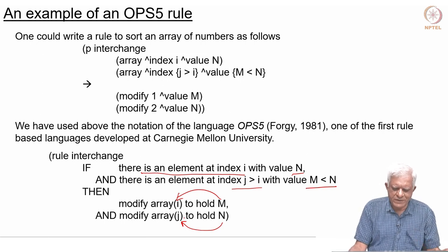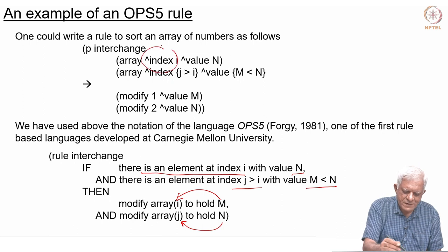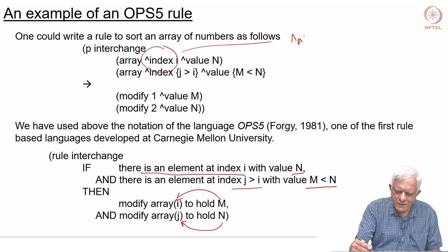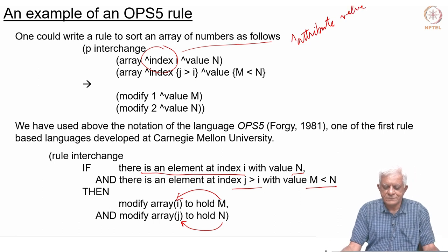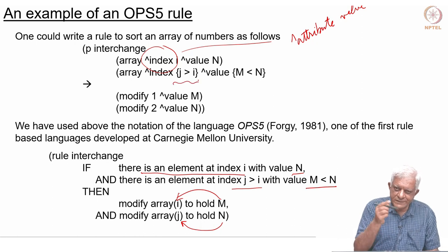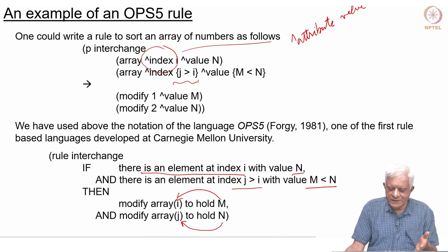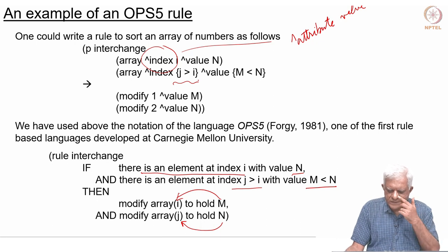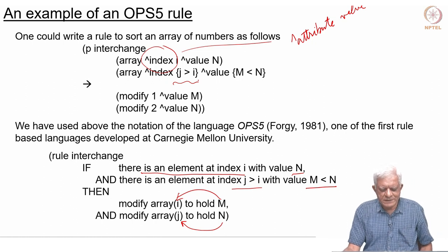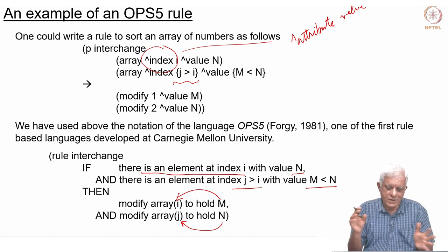In OPS5, the notation uses attribute-value pairs, allowing relational symbols as values. The rule says: if at index i the value is n, and at index j (greater than i) the value is m (less than n), then modify the two locations — the first should contain m and the second should contain n. This is an example of how much you can do simply by expressing your program as rules.